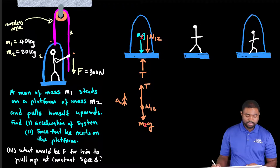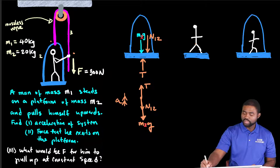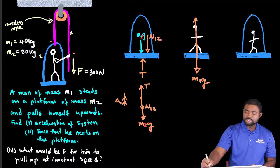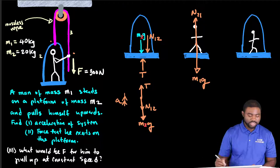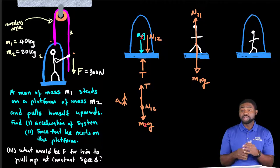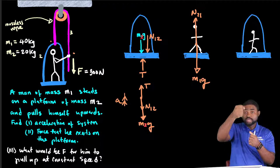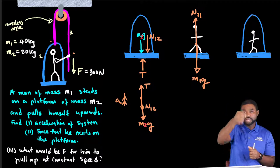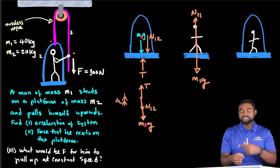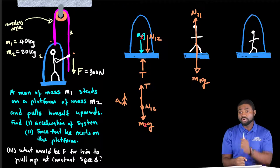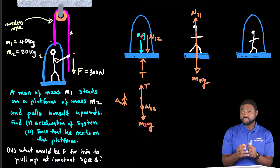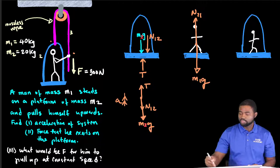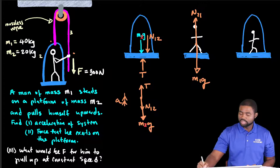Moving on to the man: obviously, the weight of the guy acts downwards — this is M1G. We have the normal force that the platform asserts on him acting upward. Also, remember the guy pulls the rope downwards — this is the point where students often miss it. By Newton's third law, the string will pull on him upwards with an equal but oppositely directed force, meaning a tension force T acts on him upwards.